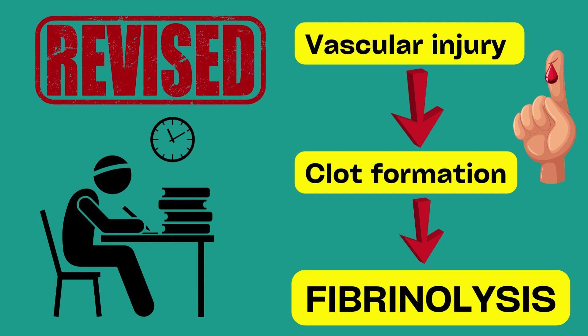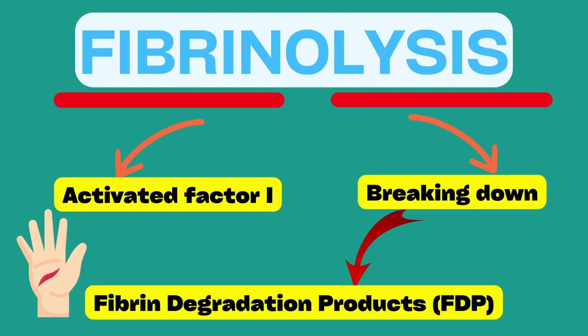Following a vascular injury and clot formation, the discontinuity of the blood vessels is repaired by proliferation of adjacent fibroblasts, smooth muscle cells and endothelial cells. Now let us go into the details of fibrinolysis.